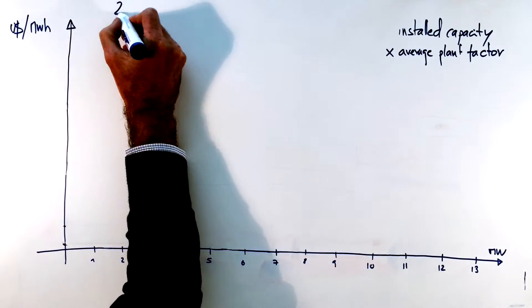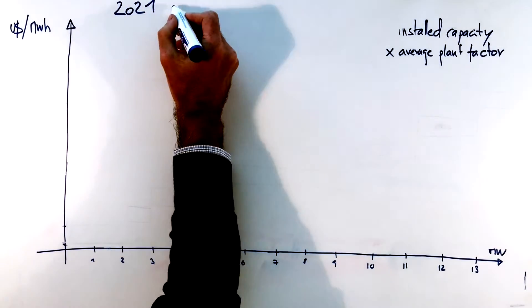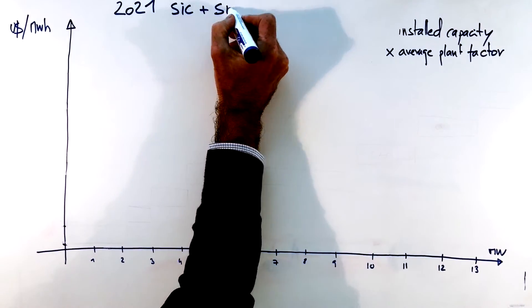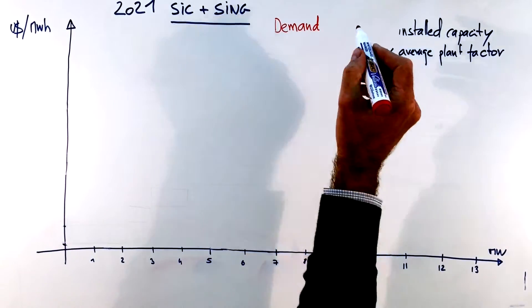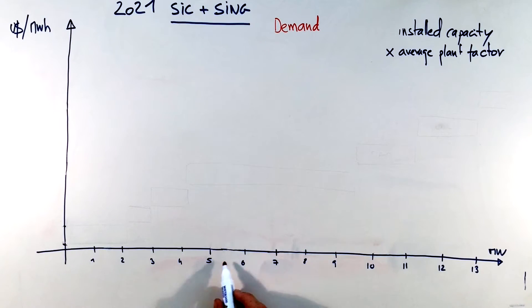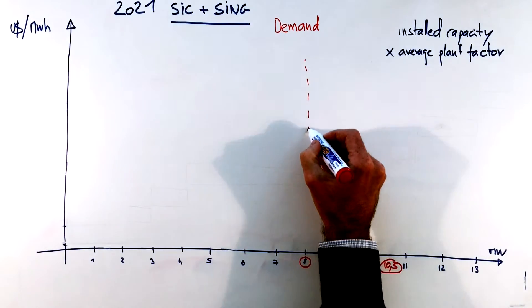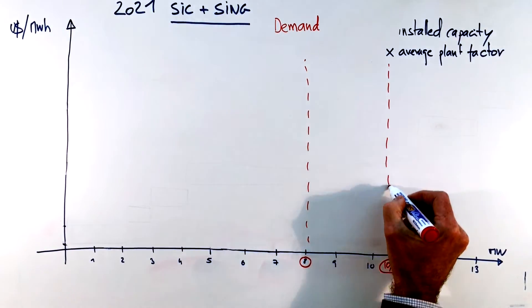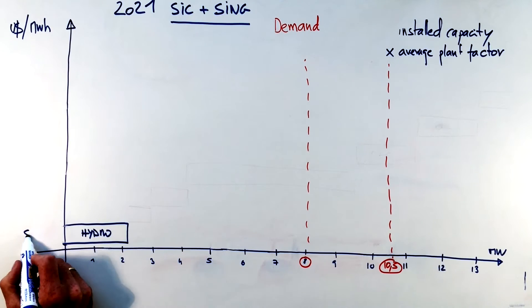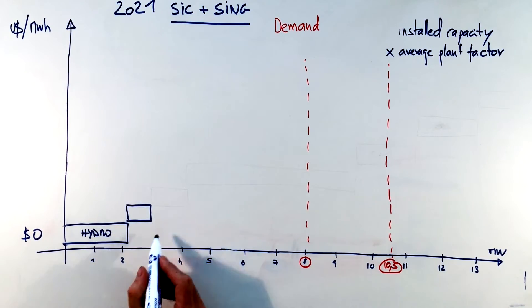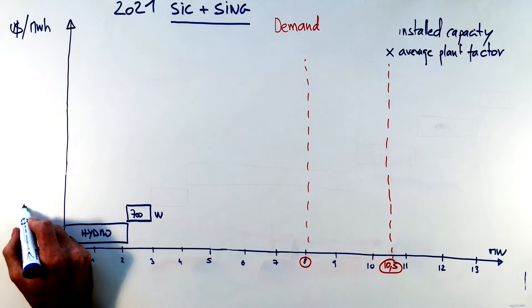Let's now look what happens in 2021. Here we have the SIC merging with the SING. So as we saw before demand is going to be impacted and it's going to be much higher for growth reasons and for these merge reasons. So demand is going to be oscillating between 8,000 and 10,500 megawatts. So here our load curve is the same, 2,000 a bit more of hydro at zero.